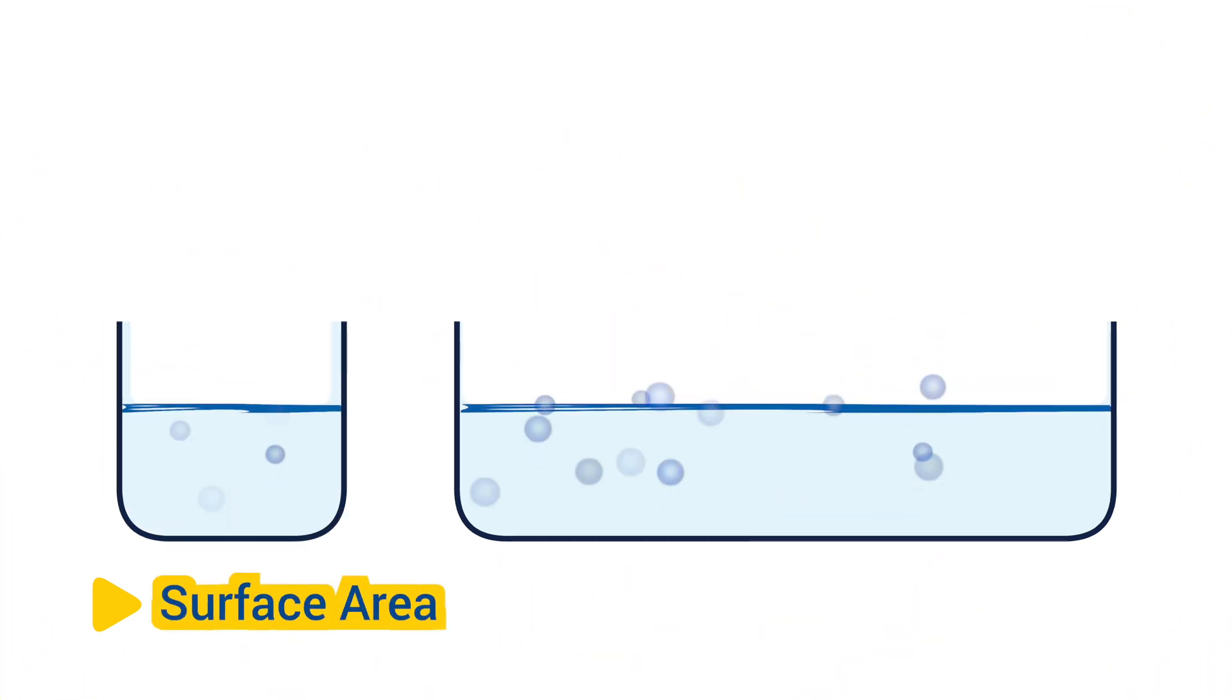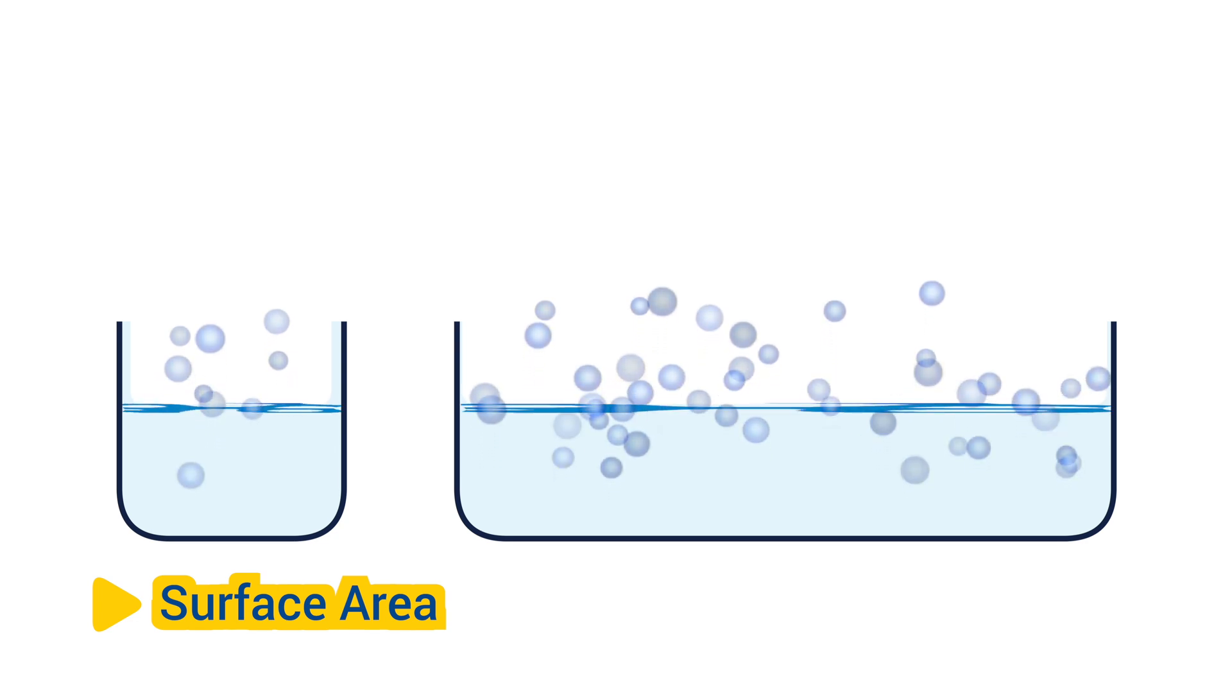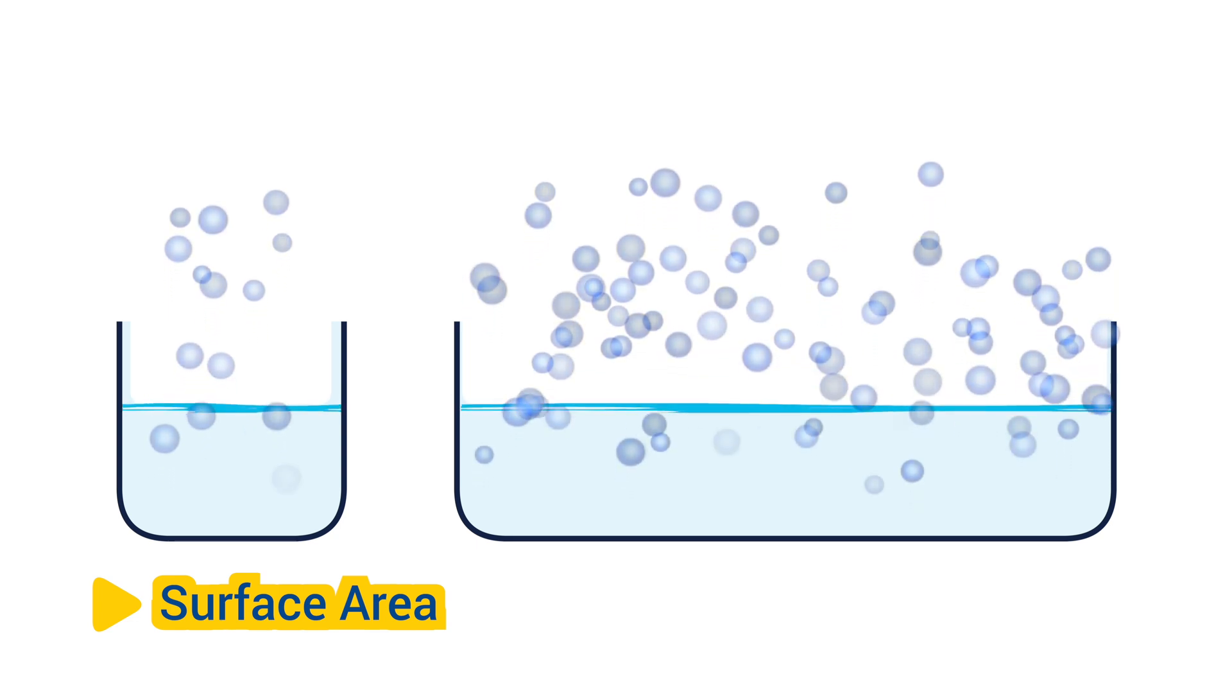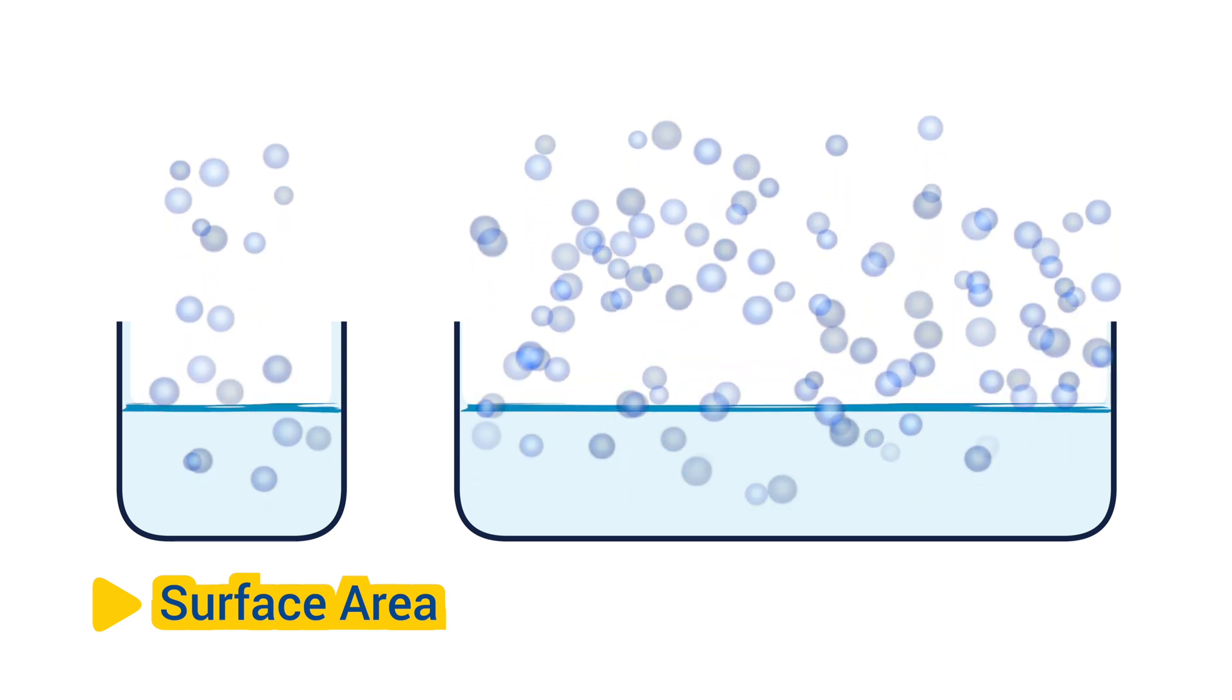Surface area. Evaporation rate is also influenced by the surface area of the liquid exposed to the surrounding air. A larger surface area allows more molecules to escape into the air, resulting in faster evaporation.